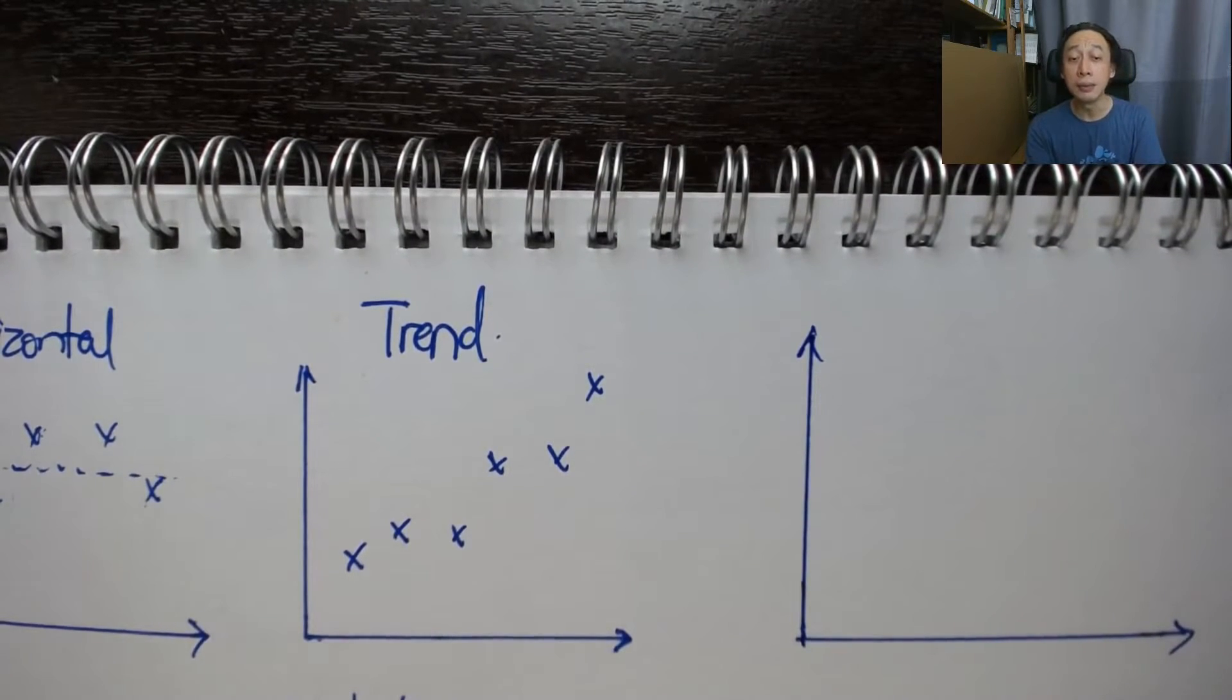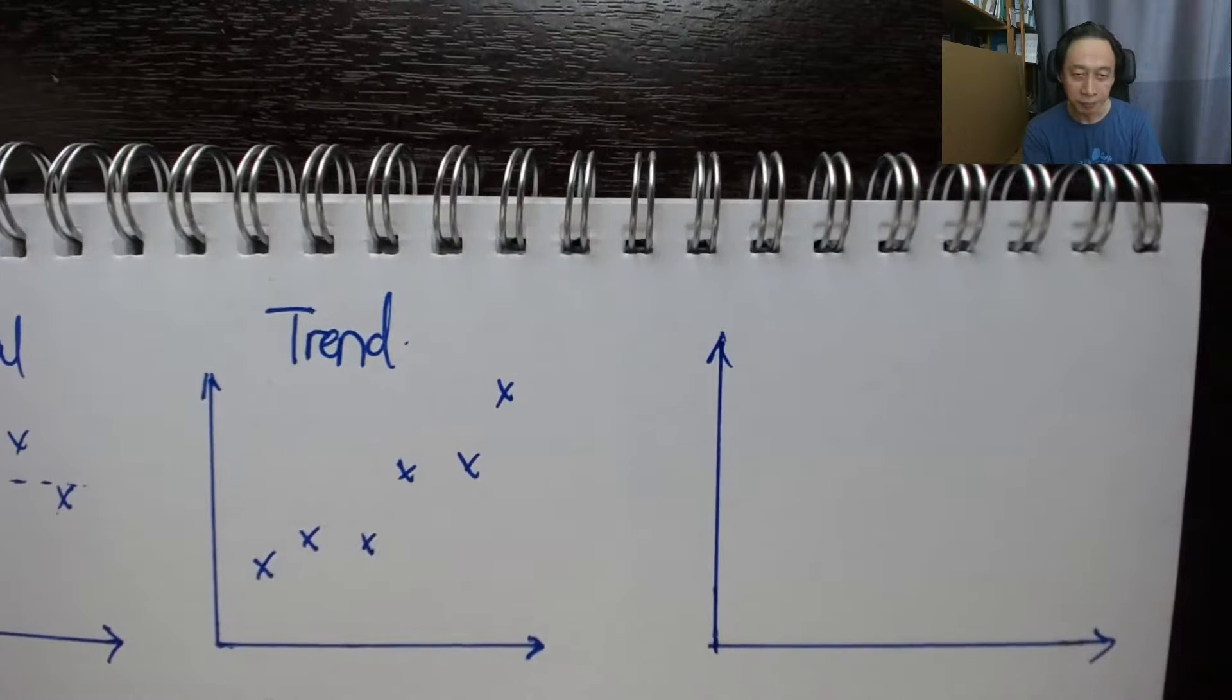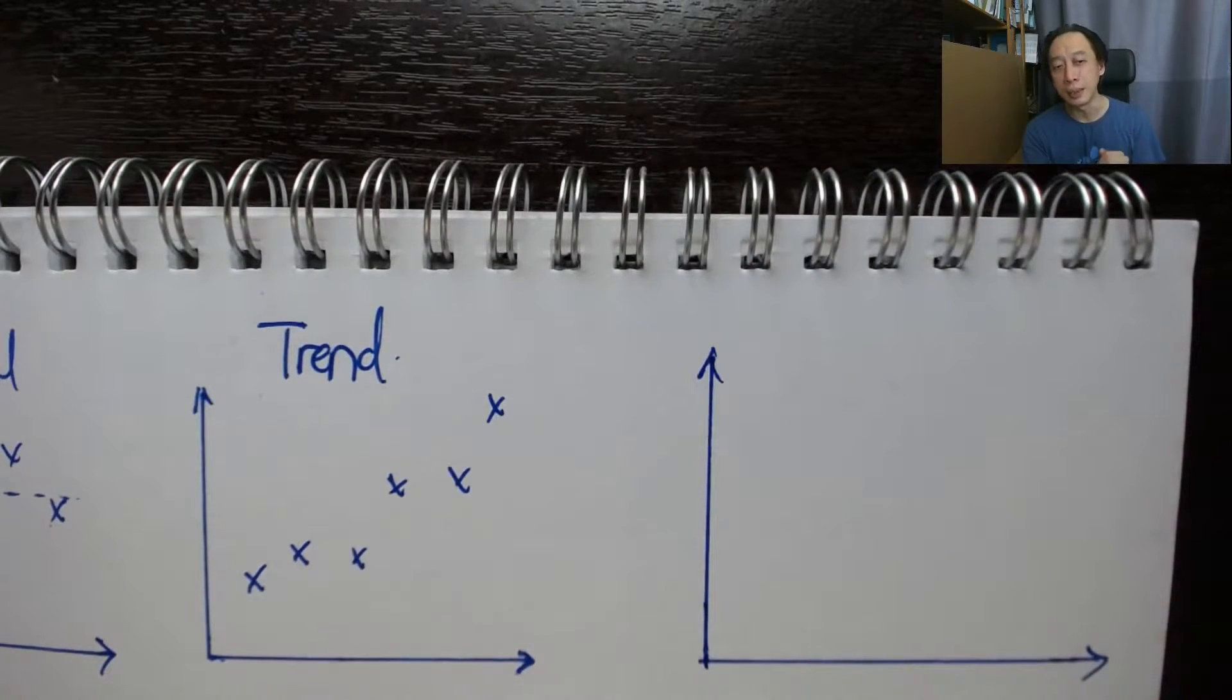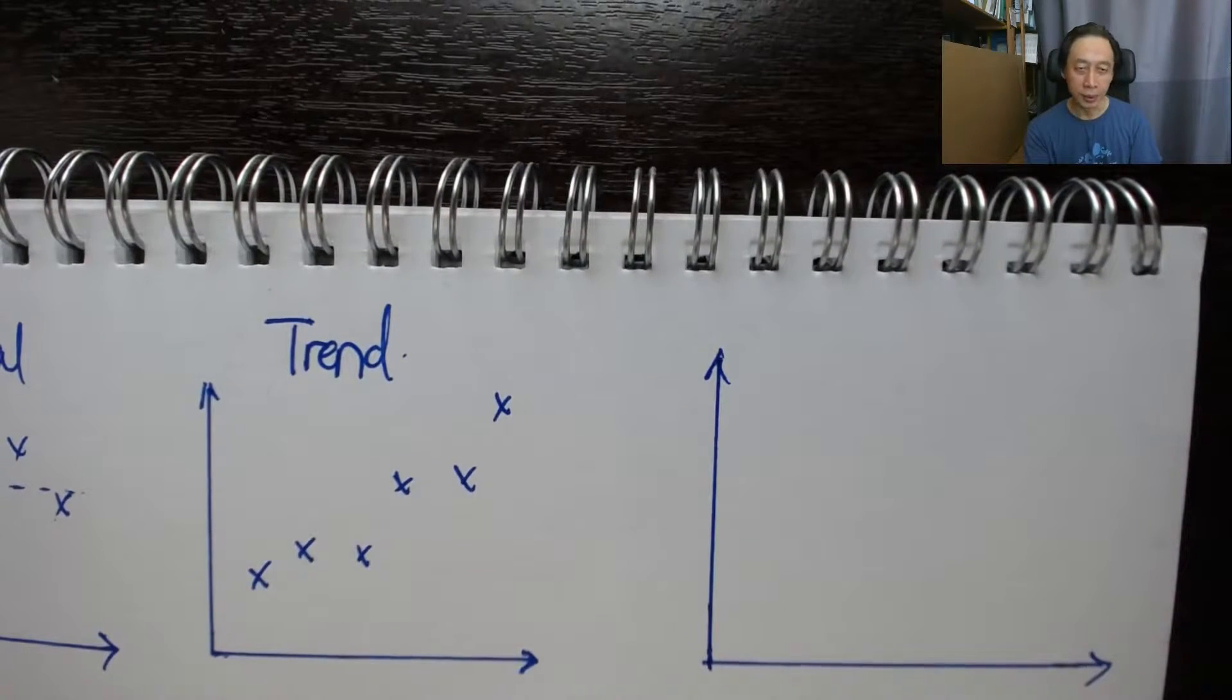So seasonal, as the word suggests, means that there is some kind of repeated pattern, much like cyclical as well. So in both cases, there is a repeat of the pattern in the data.